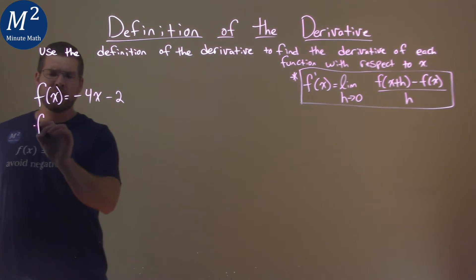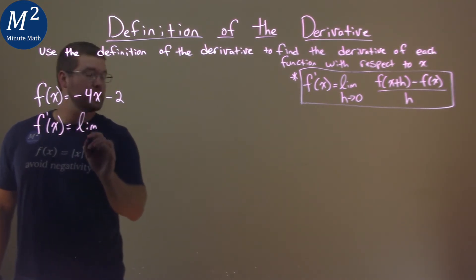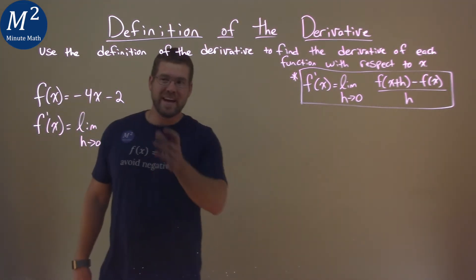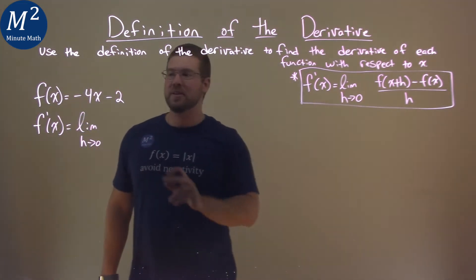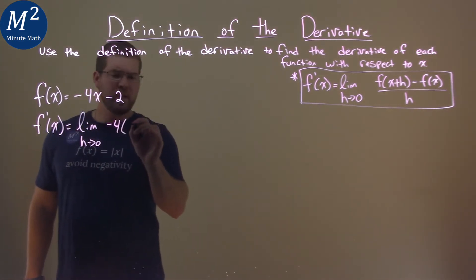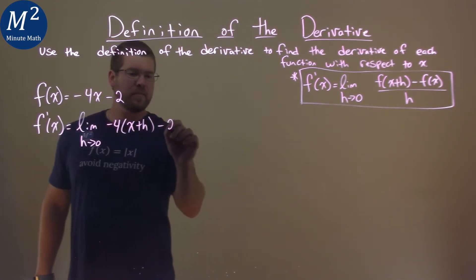So we're going to find our f prime of x. We need to take the limit as h approaches 0 of our function right there. Now the function is going to have x plus h in for the x value. So we take negative 4, and then we put x plus h instead of that x value, and minus 2.